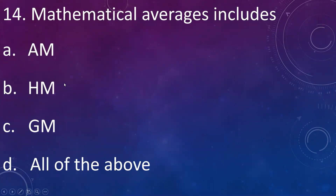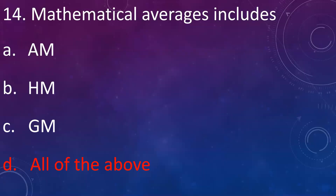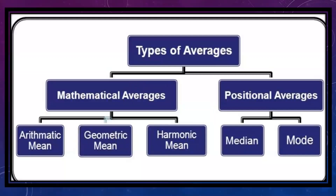Mathematical average includes: A: arithmetic mean (AM), B: harmonic mean (HM), C: geometric mean (GM), D: all of the above. Answer is D: all of the above. Averages are classified into two types — mathematical averages and positional averages. Mathematical averages include arithmetic mean, geometric mean, and harmonic mean, whereas positional averages include median and mode.